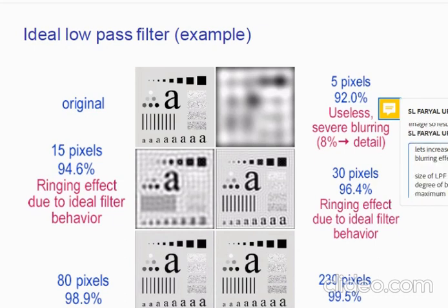The size of a low pass filter is inversely proportional to the degree of blurriness. The smallest size of low pass filter creates the maximum blurriness, so increasing the filter size reduces the blurring effect.